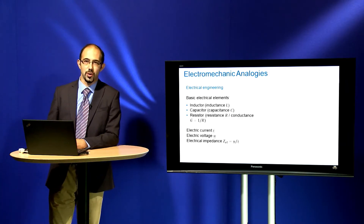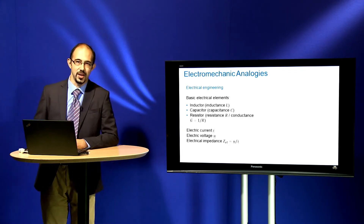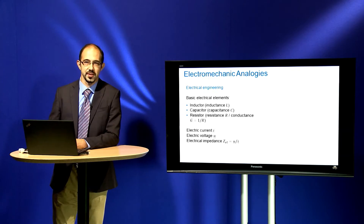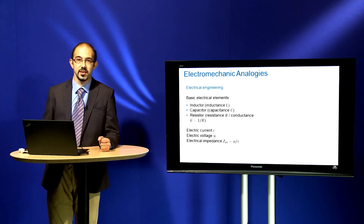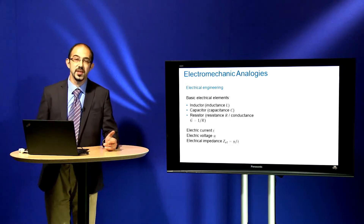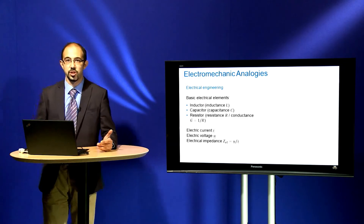First, I will talk on the electromechanic analogies and I will start with basic electrical elements. We have three basic electrical elements: first of all, inductor, capacitor and resistor. Also, we use conductance, as you can see in the slide. And we have field variables like electric current and electric voltage — I use the underline for the complex variables. And if I define the electrical impedance, it is the ratio between the voltage and the current.